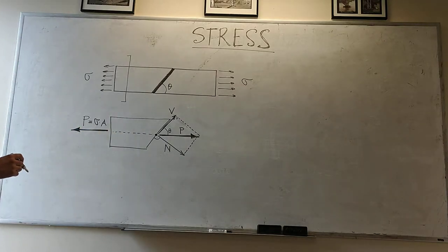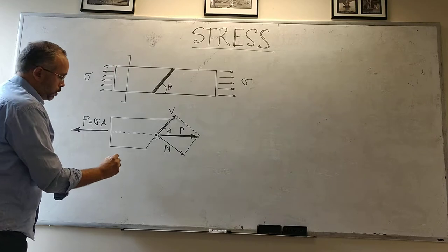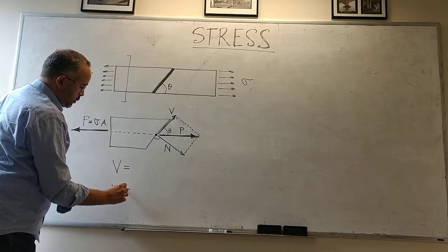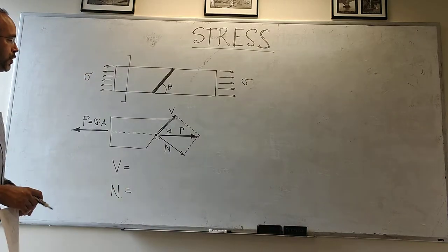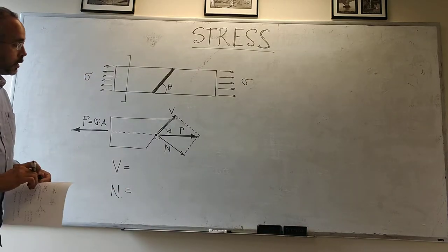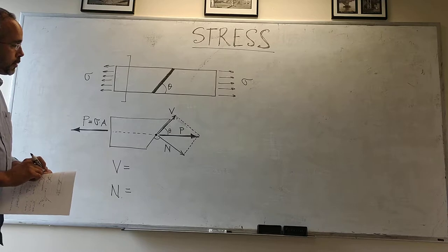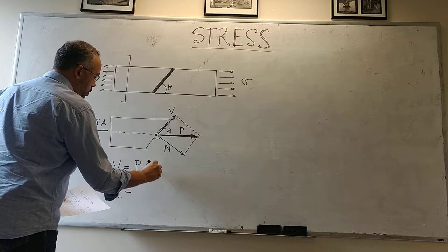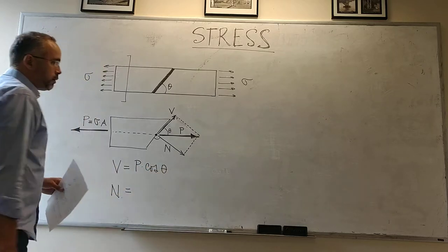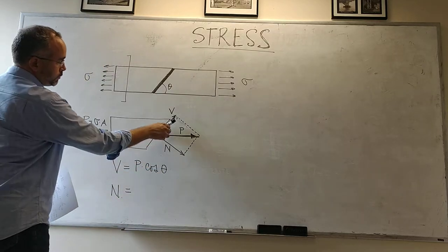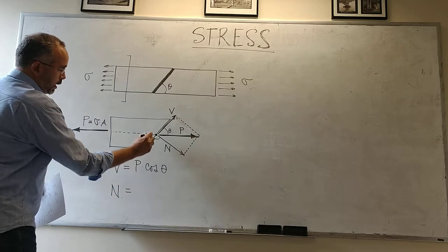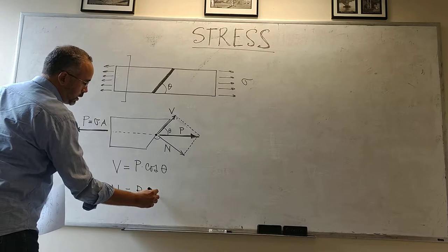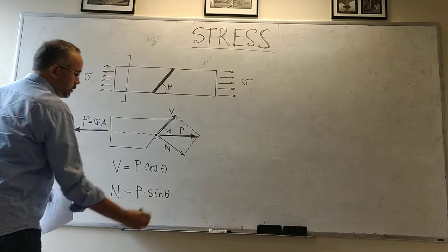Using simple trigonometry we can find the value of V and N. V would be P times cosine of theta, while N, the normal force, would be P times sine of theta.